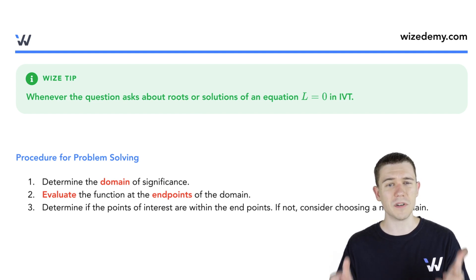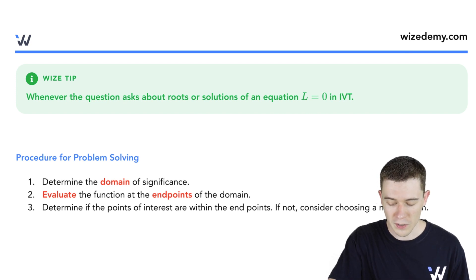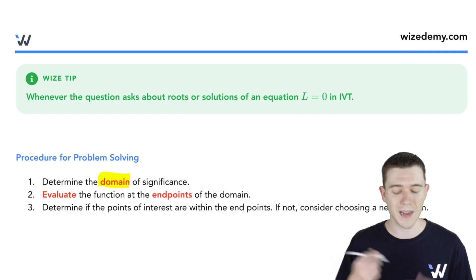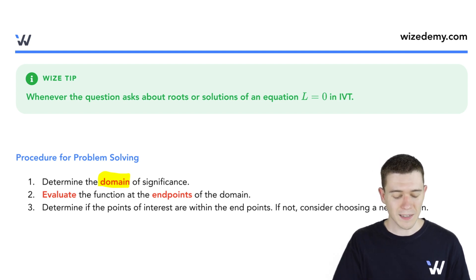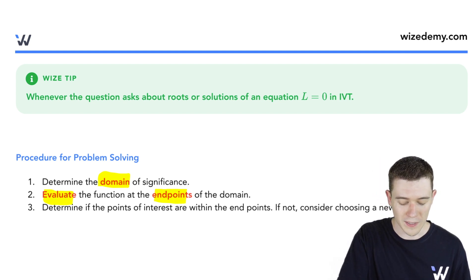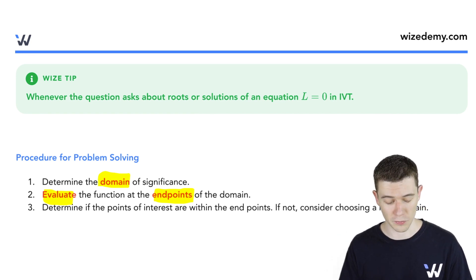Here's a nice three-step procedure for solving these problems. First, you want to determine the domain of your problem. In other words, what's that interval a to b? Next, you want to plug in those endpoints of your function. Plug in a, plug in b to your function. And lastly, figure out if your function evaluated at those endpoints gives you some interesting values.